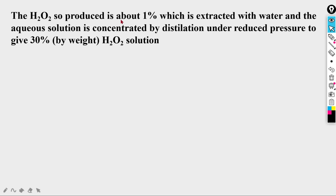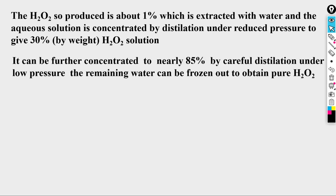The H₂O₂ produced is about 1%, which is extracted with water. The aqueous solution is concentrated by distillation under reduced pressure to give 30% by weight H₂O₂ solution. It can be further concentrated to nearly 85% by careful distillation under low pressure, and the remaining water can be frozen out to obtain pure H₂O₂.